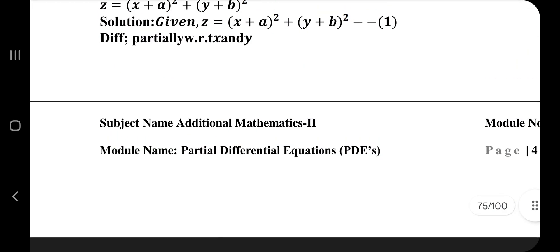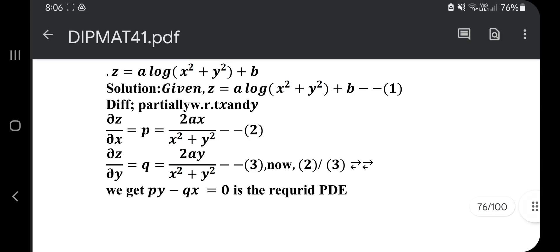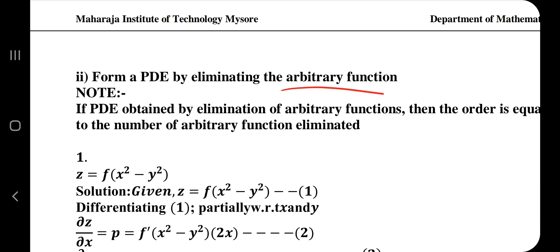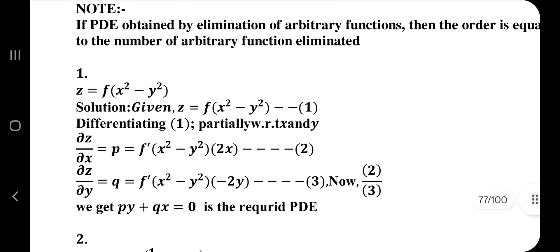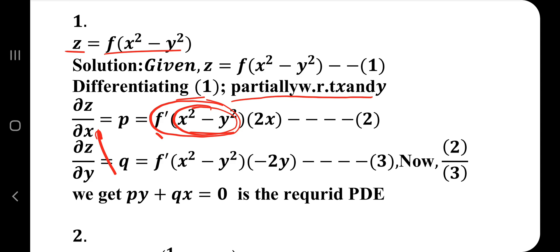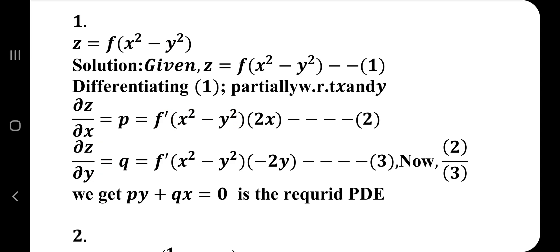There are more examples you can practice, but the approach remains the same. The next topic is elimination of arbitrary functions. In the model question paper, both or-questions asked to eliminate arbitrary functions — it's very important. The equation given is z = f(x² − y²). Differentiate partially with respect to x and with respect to y. When differentiating a function, write f' and then differentiate the inner part with respect to x or y respectively. Differentiating x² − y² with respect to x gives 2x, and with respect to y gives −2y.